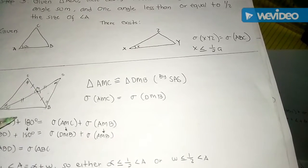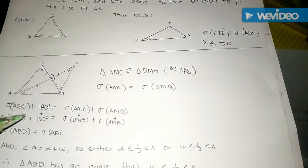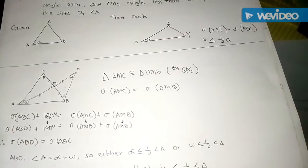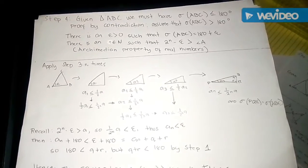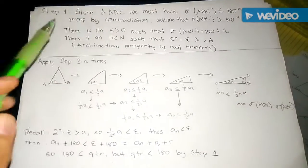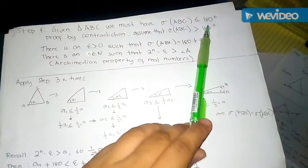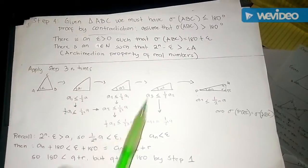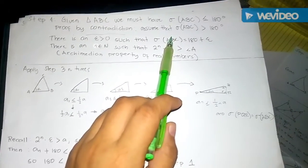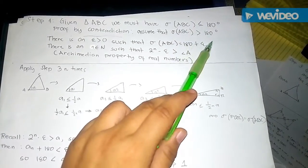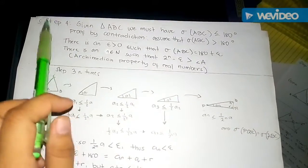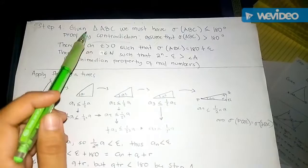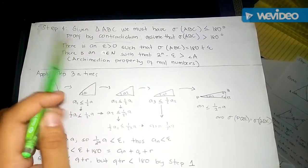Finally we move on to Step 4, the final step in the proof of the Saccheri-Legendre theorem. Our ultimate goal is to show that σ(ABC) ≤ 180 degrees. To prove this we use a proof by contradiction. Assume instead that σ(ABC) > 180 degrees, and we will derive a contradiction.